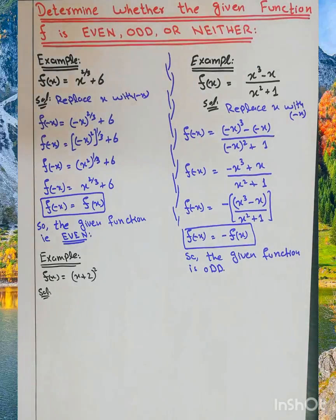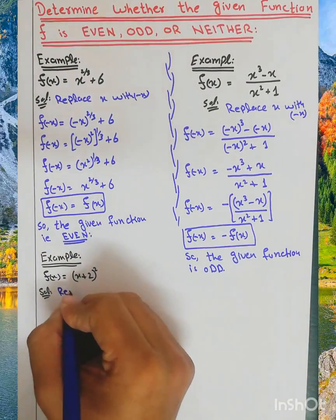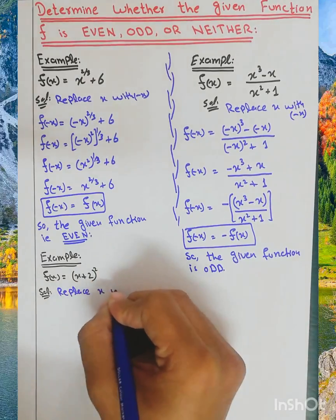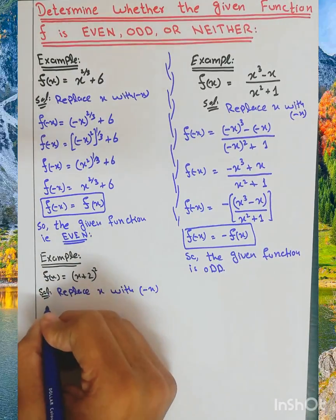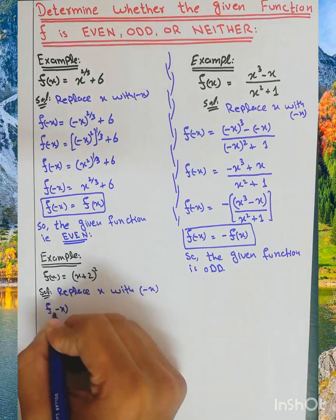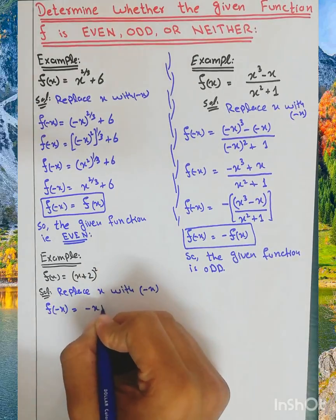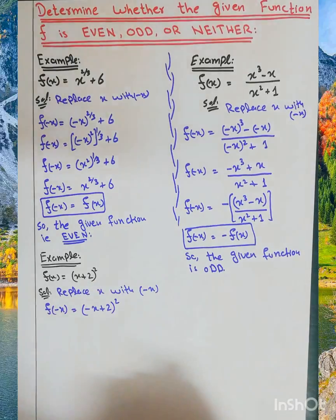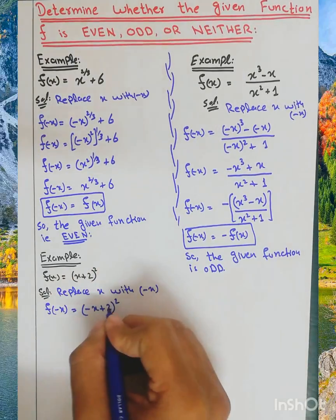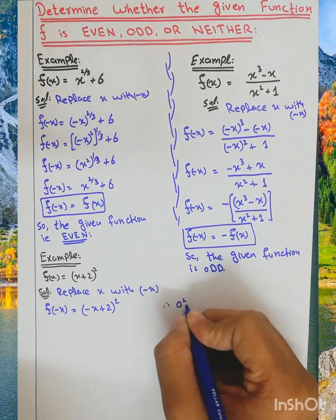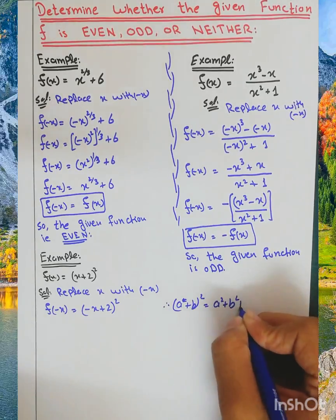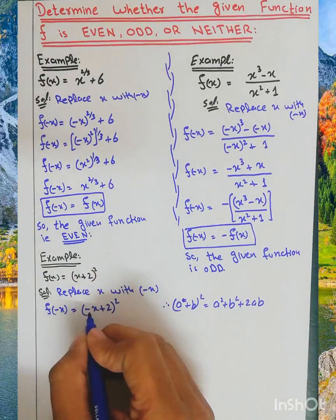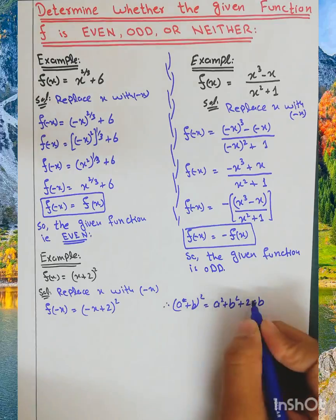We will replace x with minus x. So f of minus x is equal to minus x plus 2, whole square. Our formula is a plus b whole square, which equals a squared plus b squared plus 2ab.